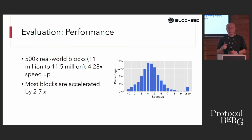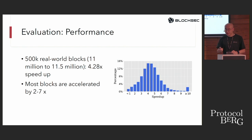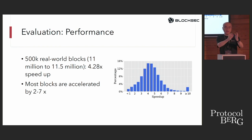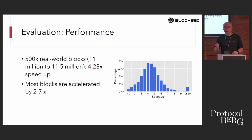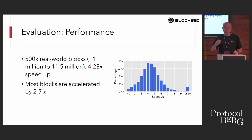The second evaluation is performance — how much speedup can our operation-level concurrency algorithm achieve. We replayed 500,000 blocks from block 11,000,000 to 11,500,000, feeding them through both vanilla geth and our system and comparing execution times. Our system achieves around 4.28x speedup, and most blocks are accelerated by at least 2.27x.